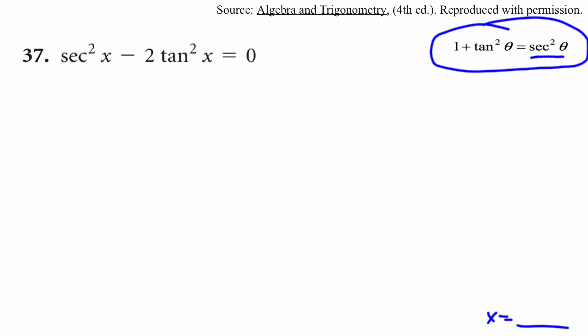So wherever I see secant squared, I can replace it with 1 plus tan squared. Okay, so here's a secant squared. I'm going to replace that with 1 plus tan squared x, minus 2 tan squared x is equal to 0.